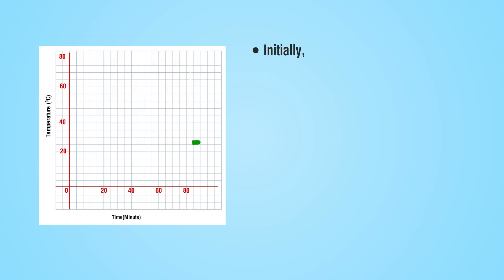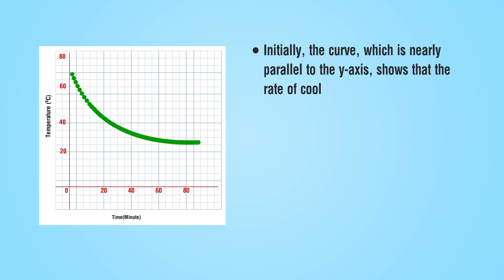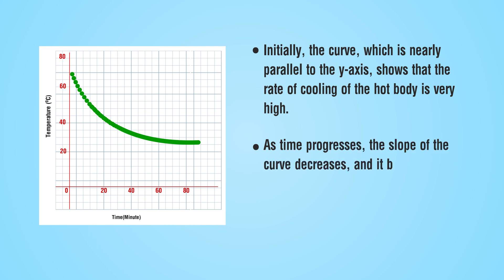From the graph, initially the curve which is nearly parallel to the y-axis shows that the rate of cooling of the hot body is very high. As time progresses, the slope of the curve decreases and it becomes parallel to the x-axis, indicating that the rate of cooling of the hot body decreases.